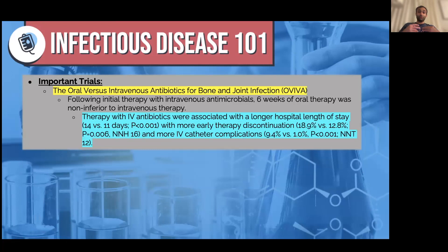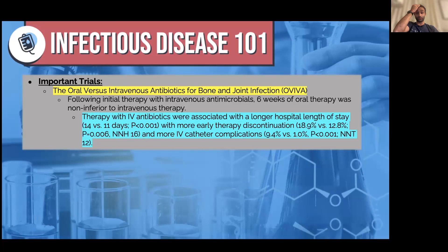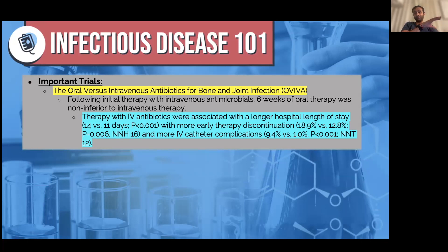The last trial is the OVIVA trial — the same general theme, but instead of endocarditis, they're looking at bone and joint infections. Assuming source control, they followed up with IV antibiotics versus PO antibiotics for bone and joint infections, and they found that oral antibiotics were not inferior to IV antibiotics. You don't have to know the nuances of all of these trials — the important part is that you know they exist and talk to your ID colleagues about them, because at the very least if you know they exist, you can bring them up.